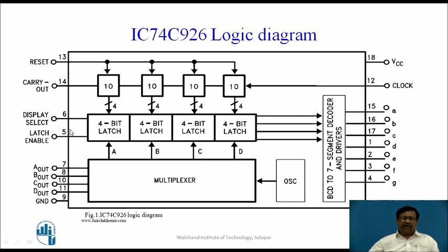There are two additional controls associated with this latch: Display Select and Latch Enable. Latch Enable is an active high signal — when we make it equal to 1, whatever the counter outputs are, these are latched, meaning stored in these latches. This is the block diagram of IC74C926. This is the BCD input and there are seven segment outputs.